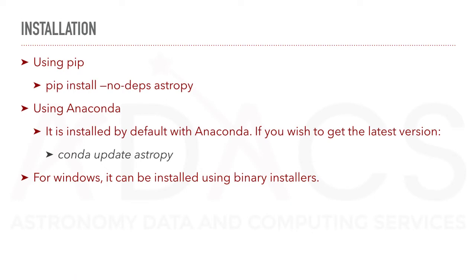To get started with AstroPy, I will assume that you have Python installed on your computer. You can install the AstroPy package using several methods. The simplest method is to install it from the Python package index, called PyPI. This is done using the pip command in the terminal. As AstroPy uses several packages including NumPy and SciPy, if you wish to avoid potentially updating your local version of these packages, you can use the flag no-deps. Else, the simple pip install AstroPy should suffice.